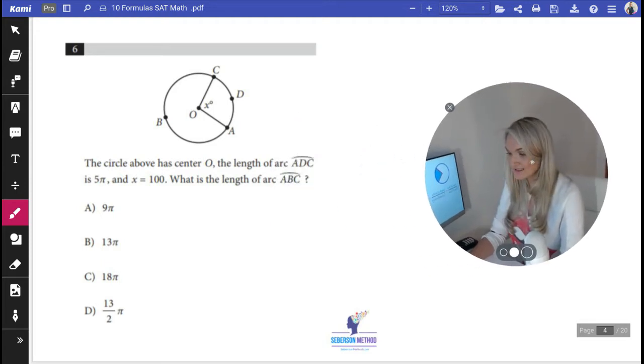So this one is quite simple. This is problem number six in the non-calculator section. It says that the circle has a center O, and the length of the arc ADC is equal to 5π.